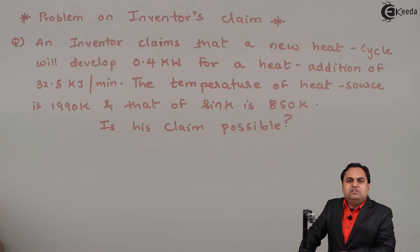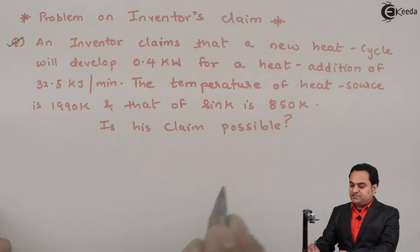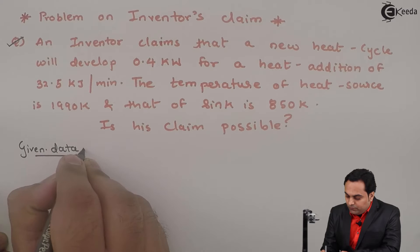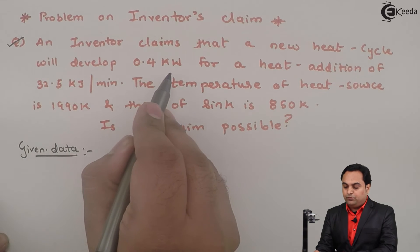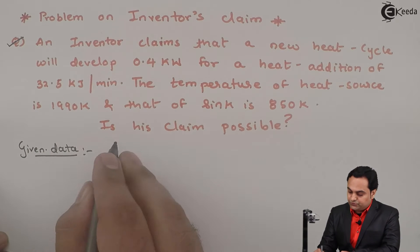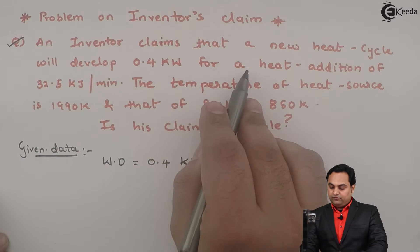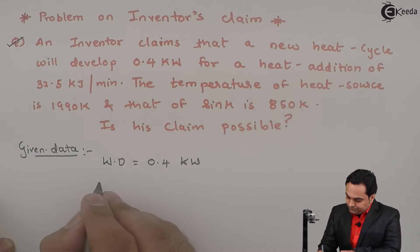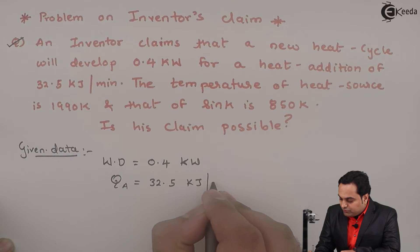In this video we will see a problem on an inventor's claim. It is given that an inventor claims a new heat cycle will develop 0.4 kilowatts of work output, for a heat addition of 32.5 kilojoule per minute.